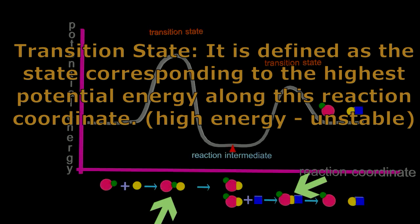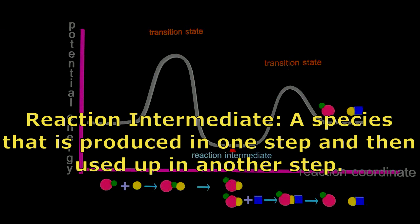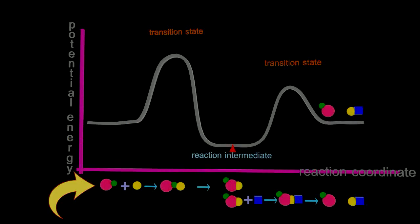The reaction intermediate is a species that's produced in one step and then used up in another step. Notice that the chemical that goes in as a reactant...